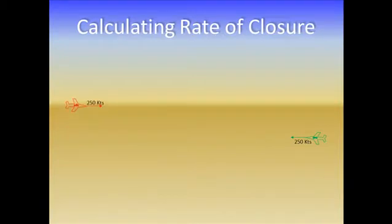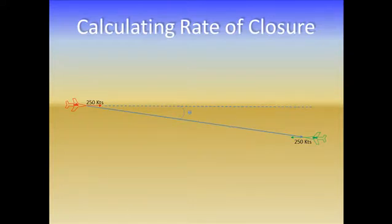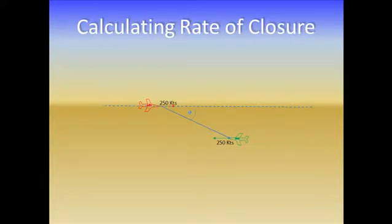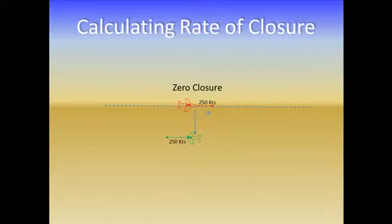Let's take a situation that's similar but slightly different. In this case, the airplanes still have a 250 knot airspeed. They're headed towards each other, but they're not actually on a collision course — they're going to pass abeam each other. So as they're far away from each other, the closure is still about 500 knots. The difference is that we have a slight angle between the two airplanes. As the airplanes continue to move towards each other, this angle is changing. And as they get abeam each other, we've gone from about 500 knots of closure to zero knots of closure, and then the closure is negative.